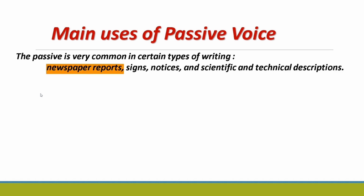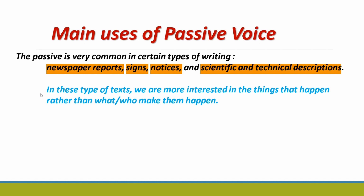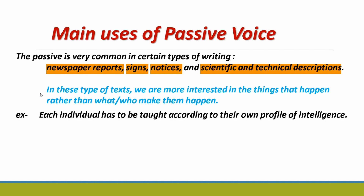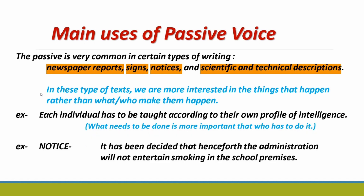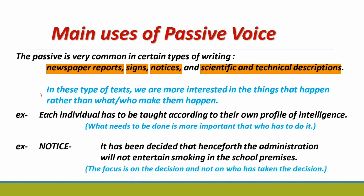Another use of passive voice: the passive is very common in certain types of writing — newspaper reports, signboards, notices, and scientific or technical research descriptions. In this type of text, we are more interested in the things that happen rather than who makes them happen. Example: 'Each individual has to be taught according to their own profile of intelligence.' The doer — the teacher — is hidden, but what is to be done is mentioned. The result is important. Another example: 'It has been decided that henceforth the administration will not entertain smoking in the school premises' — the focus is on the decision, not on who made it.